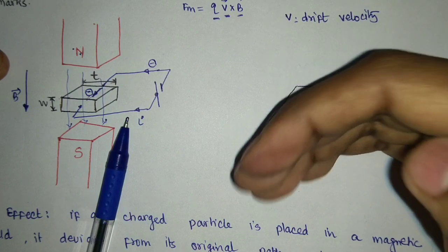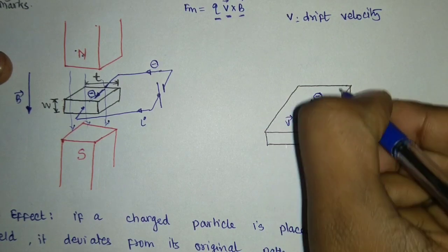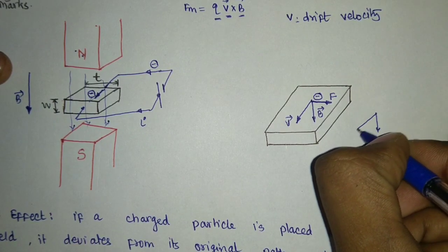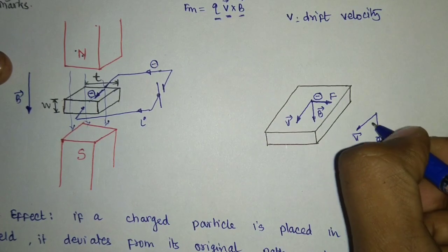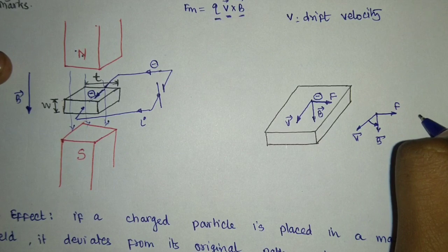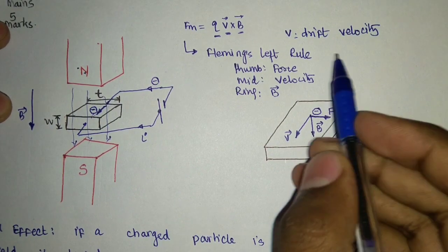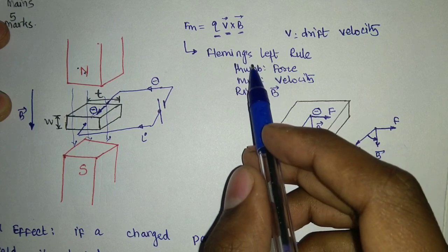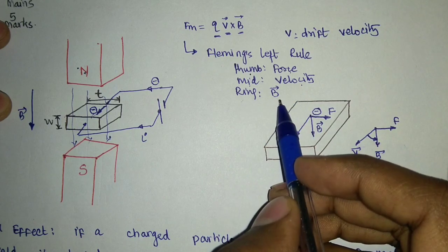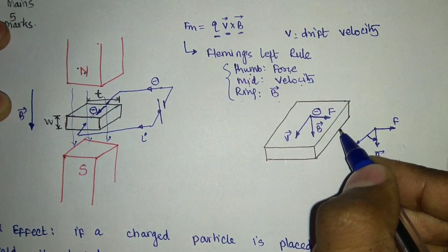V×B will give me a direction — that is the force direction we are going to get. All three are perpendicular to each other: V perpendicular to B, perpendicular to F, just like our X, Y, Z coordinates. This magnetic force direction can also be given with the help of Fleming's left-hand rule. In Fleming's left-hand rule, our thumb will represent the force when we put our middle finger in the direction of velocity and our ring finger in the direction of magnetic field. So that is how we can calculate the force direction, or we can directly do the cross product to get the force direction.